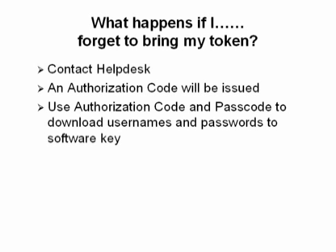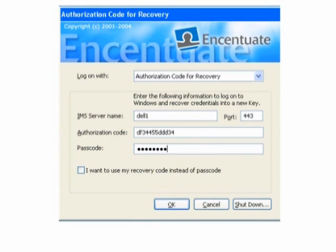If you forget to bring your token, you can use the temporary access mode to continue accessing your applications. You will need to contact Help Desk to get an authorization code. With your authorization code and passcode, you will be able to download your usernames and passwords from the TAL server to a software key. Please check with Help Desk how long your software key will be valid for, since the software key is valid for only 30 days or less.